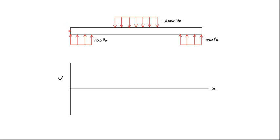To start with, let's pretend that we're to the left of the very left side of the beam, where x is a negative number. The shear force off the beam to the left is 100 pounds minus 200 pounds plus 100 pounds, which equals zero. So the shear force to the left of the beam has to be zero. And by the same logic, the shear force to the right of the beam, off the beam, also has to be zero.